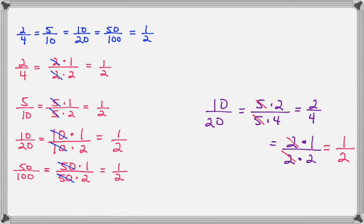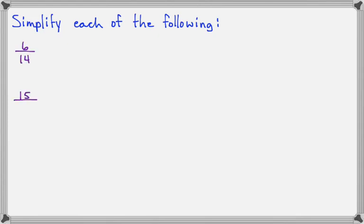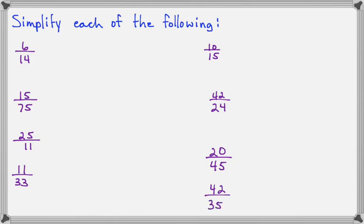So let's look at some more examples. Okay, we're going to simplify each of the following. So here are several examples for us. And let's start with 6 fourteenths. So your goal is to factor them each to either all the way to prime numbers or at least until you see something you can cross out.